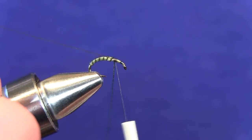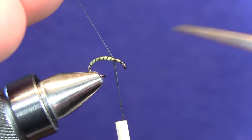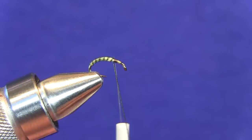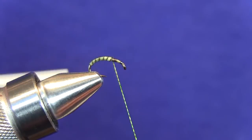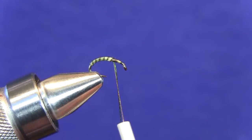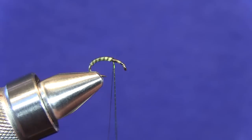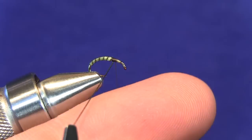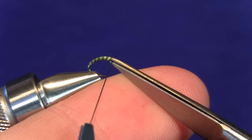As you can see here, just getting it started on the hook shank. Go ahead and take your scissor tips, snip out that tag end, and we're going to make a few wraps behind that sulky metallic thread just to bind it down. Got the second wrap, make a couple wraps in front, and now we're ready to clip out that tag with our scissor tips.